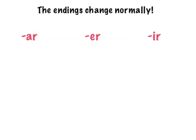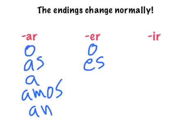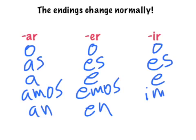The endings in present tense stem-changing verbs change just like any other present tense ending. For AR verbs it's O, AS, A, AMOS, and ON. For ER verbs it's O, ES, E, EMOS, and EN. For IR verbs it changes to O, ES, E, IMOS, and EN.